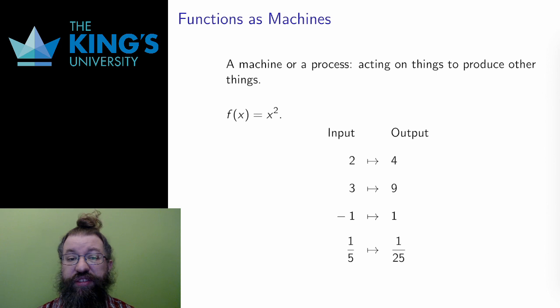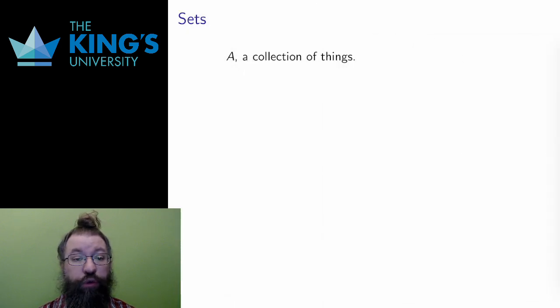This interpretation is a bit fuzzy, a bit informal. Mathematicians like to formalize things, to write down very clear rules and definitions. The second interpretation of a function is the formal, abstract, mathematical definition. It starts with sets.